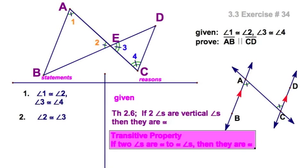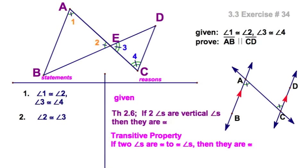That sounds like a good friend, the transitive property. Two angles are congruent to congruent angles, then they are congruent. That gives me angles one and four congruent.